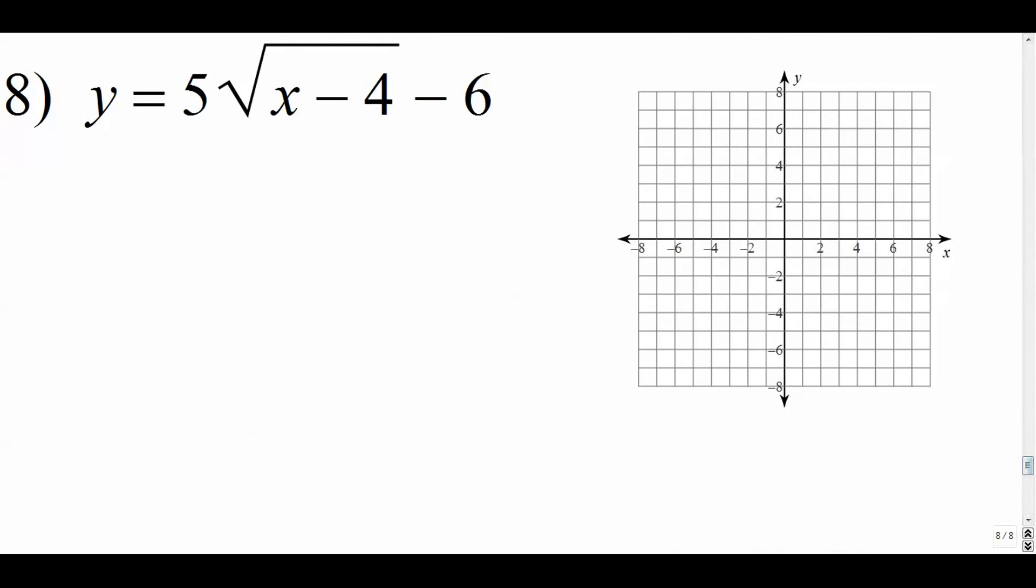Last one. Again, let's draw in our parent here. We've got that as our parent. This is going to go right 4 down 6, and it's going to be stretched big time by a factor of 5. So I'm going to go right 4 down 6, and I'm going to stretch this thing vertically. So it's going to be like that. Alright, and again, if you wanted to, you can plug in some values here and see what you get. You know, when we plug in 4, what do we get? When we plug in 8, what do we get? Maybe that's all I'll do.